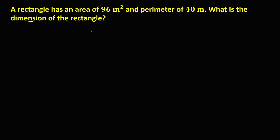From this problem, we have the area and the formula for the area of a rectangle, that's length times width. Substituting the value for the area, this becomes 96 equals the length times the width. This is equation number one.